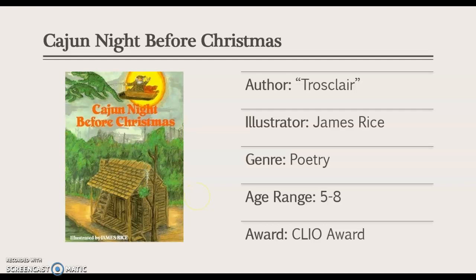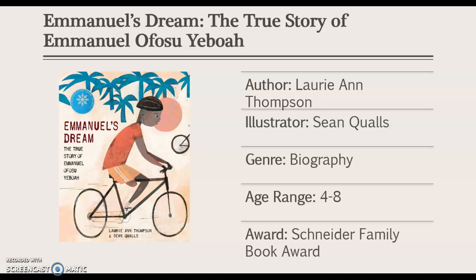Next up, we have Emmanuel's Dream. This is about a boy named Emmanuel in West Africa and how he didn't let his physical disability define him. He has a physical disability affecting his leg, but that does not impair his ability to ride a bike. He uses this skill to advocate for people with disabilities.